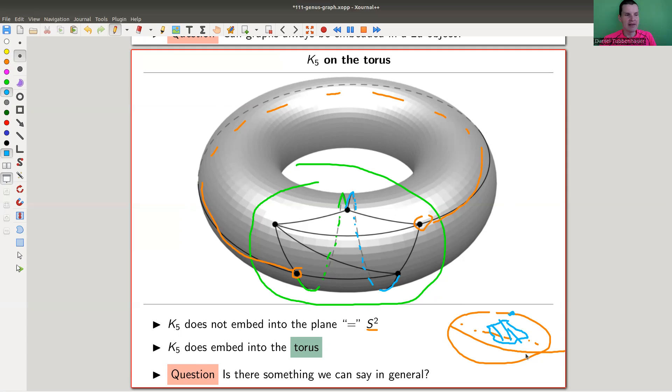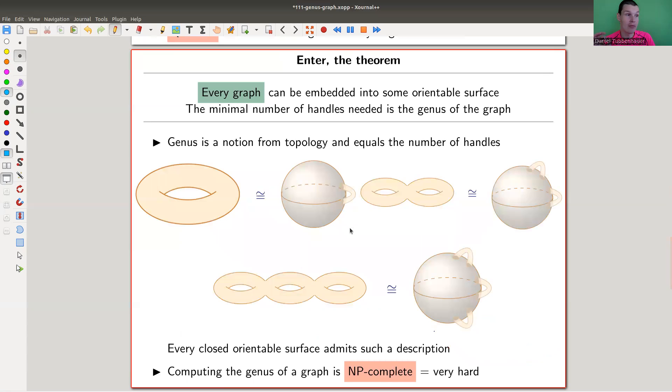The question is, can we say something in general? The point is, that's where the genus comes in. This has genus 1 because there's one handle. You can always embed on a surface. Every graph can be embedded into some surface. The number of handles needed for that surface is the genus of the graph, the minimal number of those handles. Genus is a notion of topology. Every one of those surfaces is of the following form: it is a sphere with little handles attached. The torus is a sphere with one handle, the double torus is a sphere with two handles, the triple torus is a sphere with three handles. You can attach more and more handles, and everything is of this form.